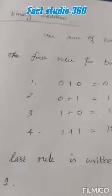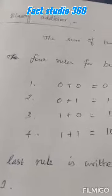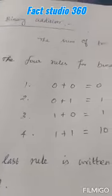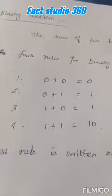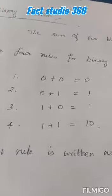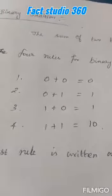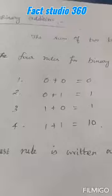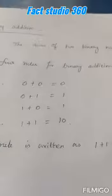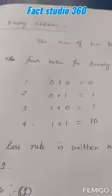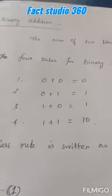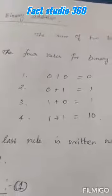Rule number 1: 0 plus 0 gives 0 in addition. It is just like decimal addition. Rule 2: 0 plus 1 is equal to 1. Rule 3: 1 plus 0 is equal to 1. The second and third rules are the same.